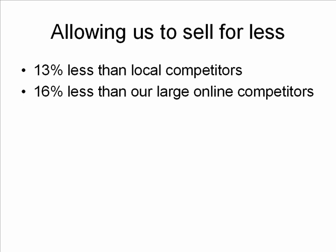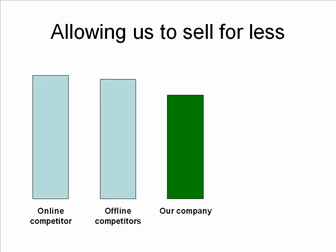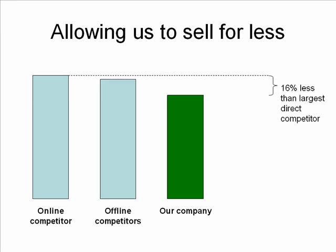So here's how I redid the slide. We can sell our products — the same products — for less. For example, when we look at our online competitors, we sell for 16% less than our largest direct online competitor. That's a significant difference. And for our local competition, we're 13% less than their prices. You can see how this model allows us to gain market share in a growing and very competitive industry.